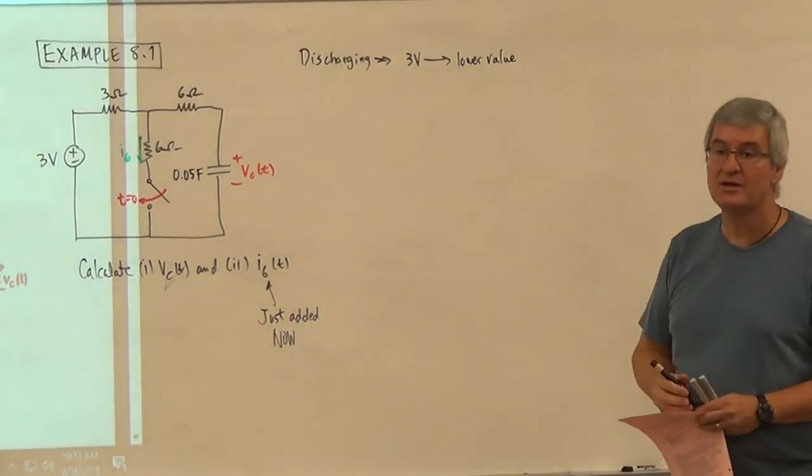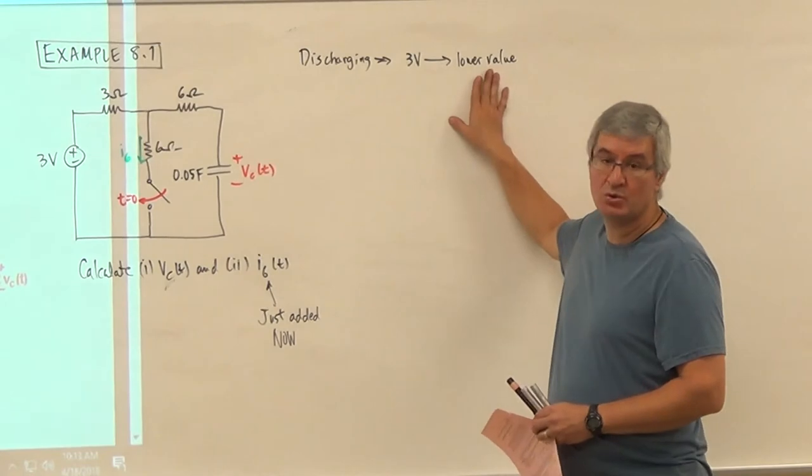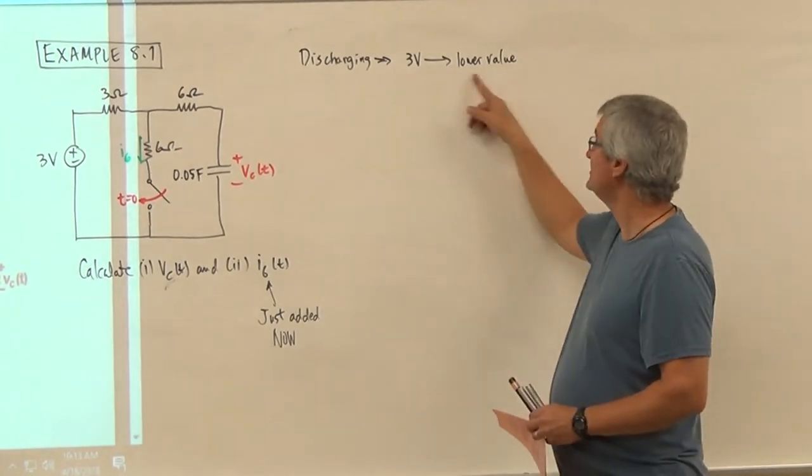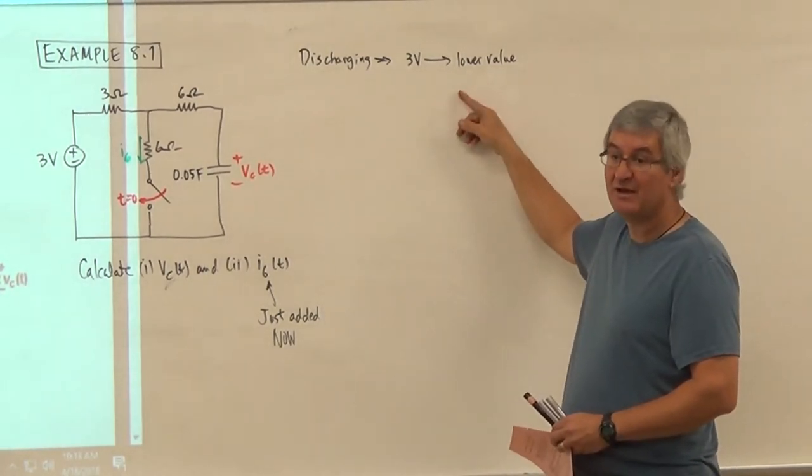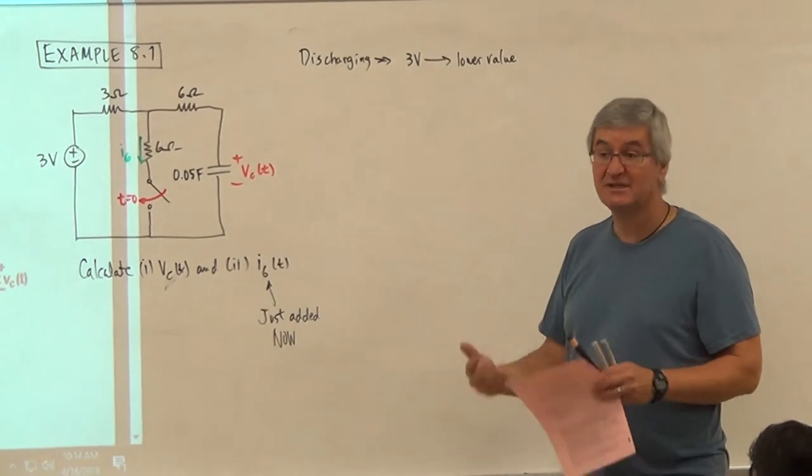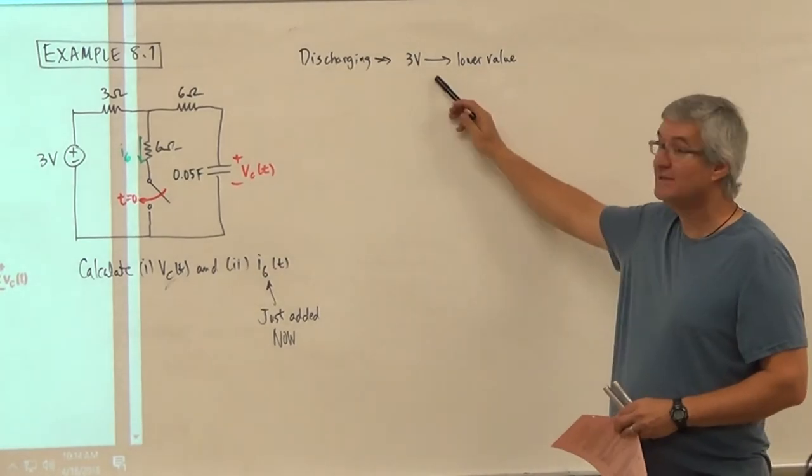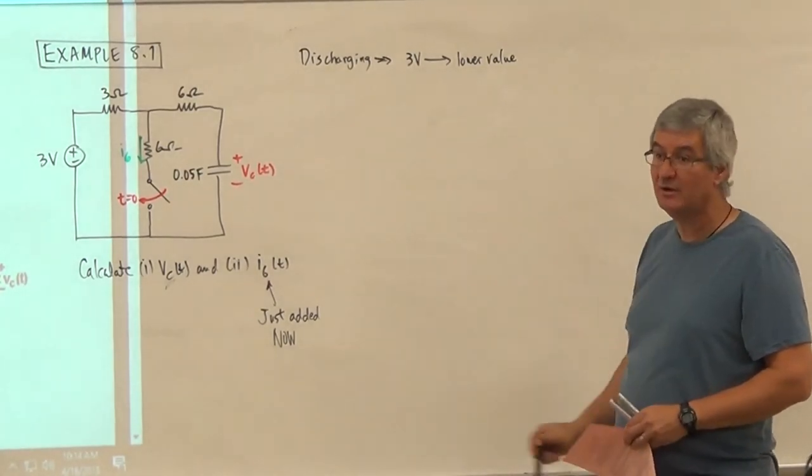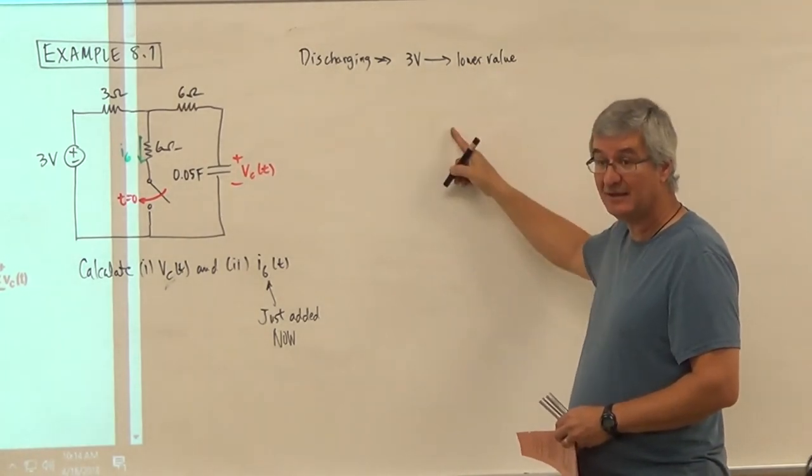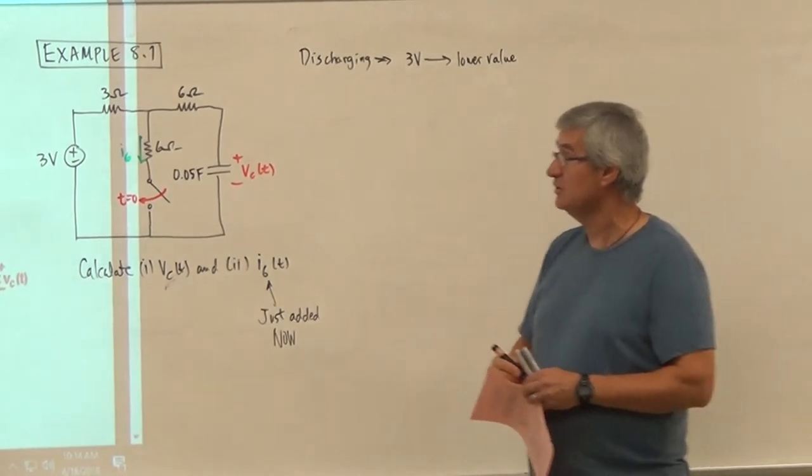It should be discharging. And from just our head calculations, it should be going from three volts to a lower value. My point here is that when you're looking at this thing, you don't need to know the number unless the number pops out at you. What you need to know is that this is what's going to be happening. So if you get a calculation and it's going the other way, guess what? You have a mistake. Go back and correct it.